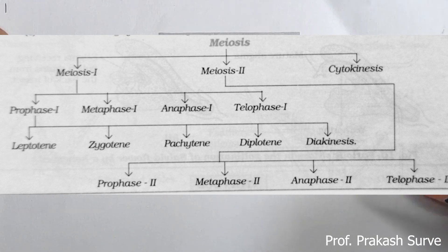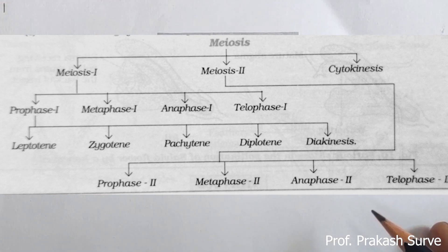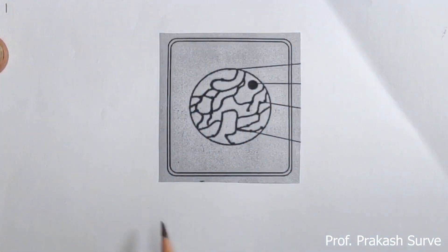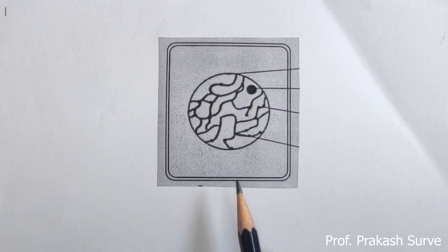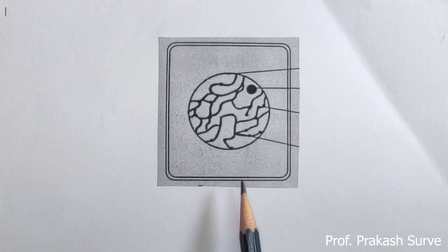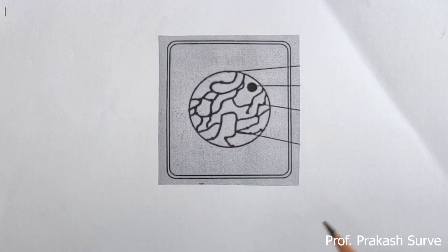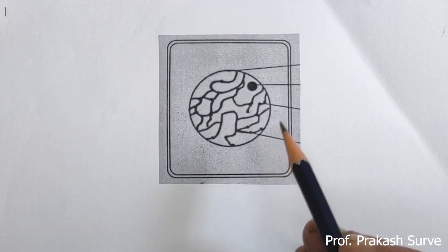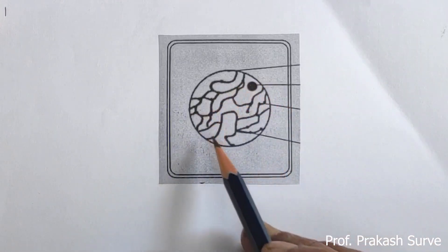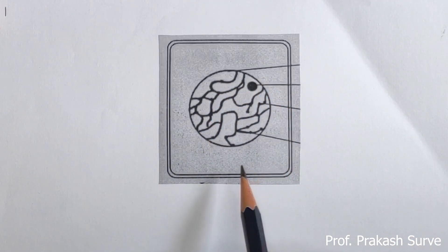In prophase one there are five stages. The first one is leptotene. A photograph of leptotene will be given to you in the exam and by observing it you have to identify which stage it is. In the exam you will write: it is the leptotene stage of prophase one of meiosis one. What you observe in this stage: the chromosomes appear like long, thin, beaded thread-like structures. The nucleolus is present and the nuclear membrane is also present.